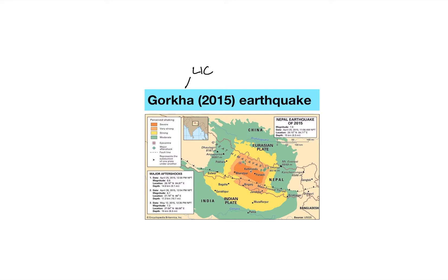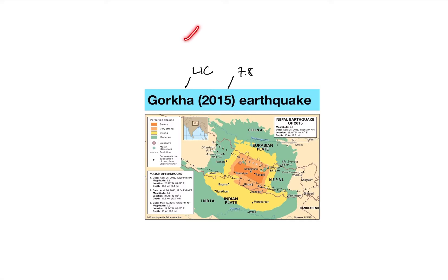Starting with the facts: this earthquake was 7.8 magnitude on the Richter scale, approximately 80 kilometres northwest of the capital, Kathmandu. The plate boundary here involves the Himalayas — some lovely fold mountains — where the Eurasian plate and the Indian plate are pushing right towards each other. It's that pushing together that causes uplift, and the pressure built so much that when it was finally released, that caused the earthquake.